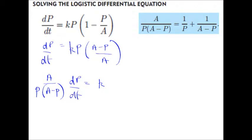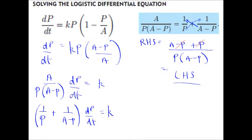To show that, if I were to consider here the right-hand side, if I'm adding two fractions, I need a common denominator. So I can multiply P and A take P. Then the A take P multiplies the one here, and the P multiplies the one there. And we can see that the minus P and the plus P cancel out, and we're left with A over P times by A take P, which is the left-hand side. So I've now rewritten my equation with the two separate fractions, as we can see down here.